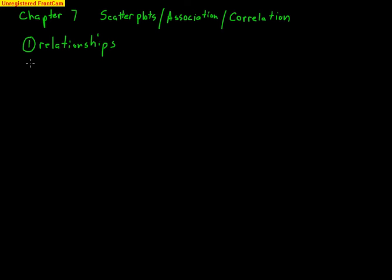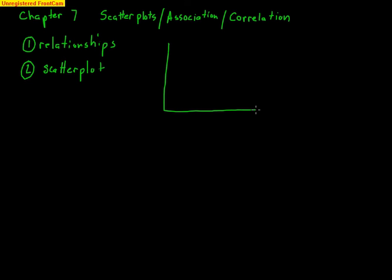The best way to identify or see a relationship between two variables is with the scatter plot. A scatter plot has an x variable and a y variable — remember, there are always two variables. Some people refer to this as bivariate data. Bivariate just means bi — two — and variable, so two-variable data.